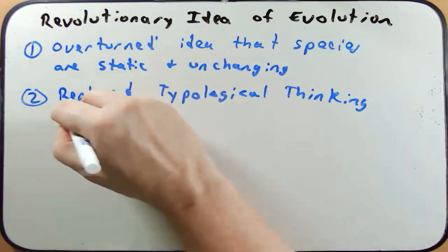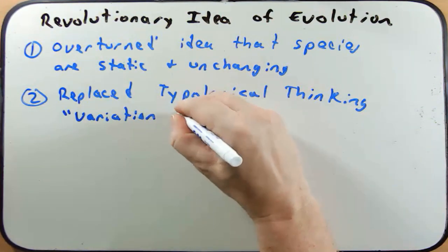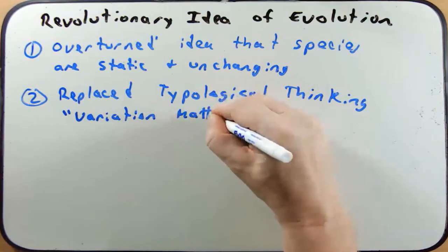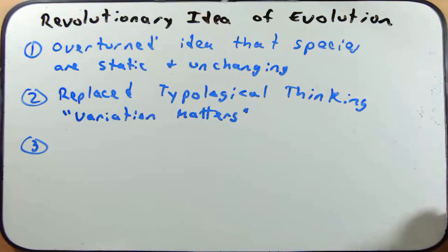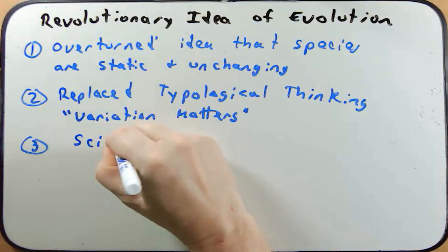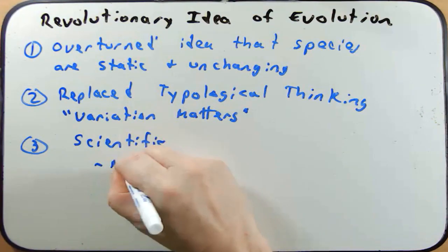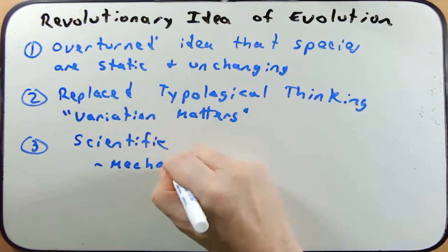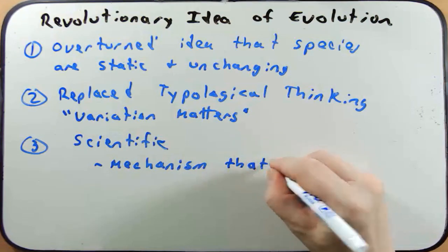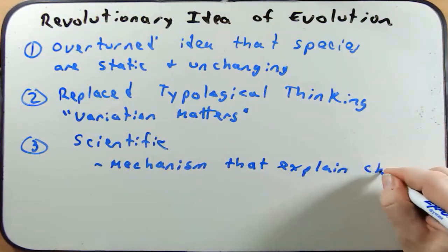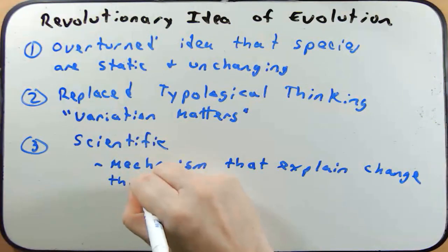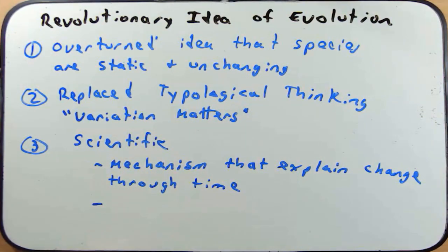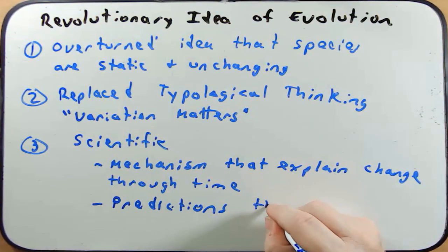Related to this is that variation matters. The last idea that really set this apart from previous ideas is that it was scientific — it proposed a mechanism that explained change through time. And most importantly, it proposed predictions that could be tested.